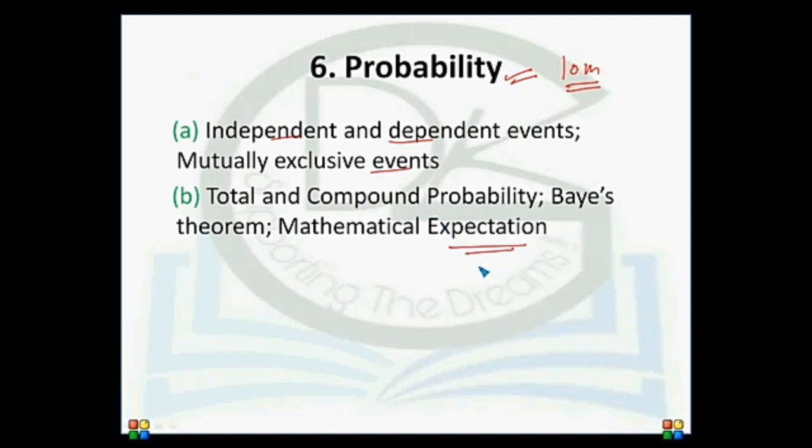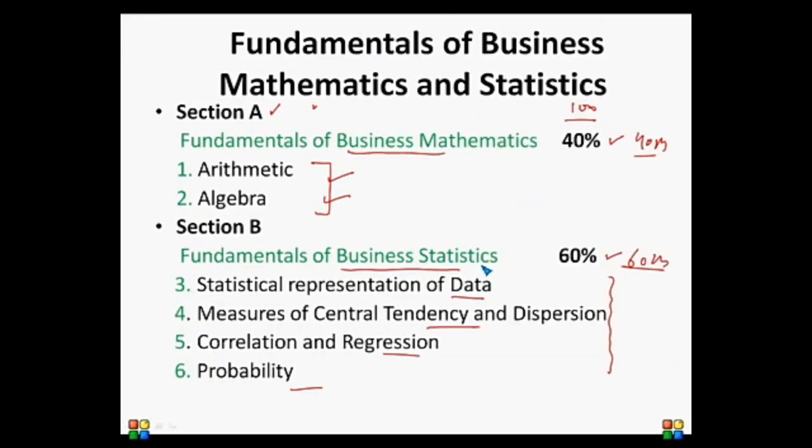Let's review the weightage: 20 marks in Arithmetic, 20 marks in Algebra, and in Section B, the most important chapter is Measures of Central Tendency and Dispersion with 30 marks, which makes it the highest weighted topic. Correlation and Regression and Probability each have 10 marks.